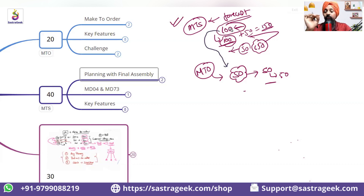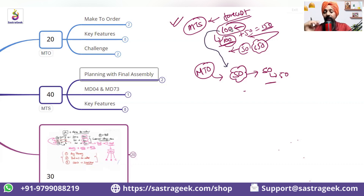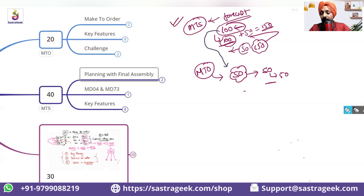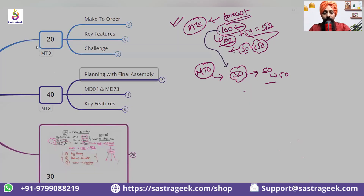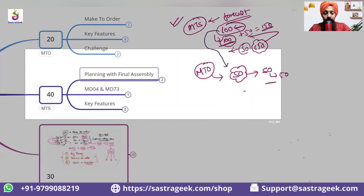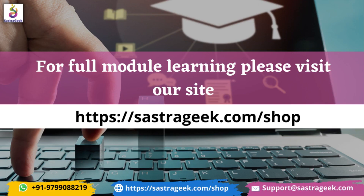That is why strategy 40 was required — it is a mix of MTS and MTO. It respects the forecast, which are plan independent requirements, and it also respects your sales orders. That is strategy 40.